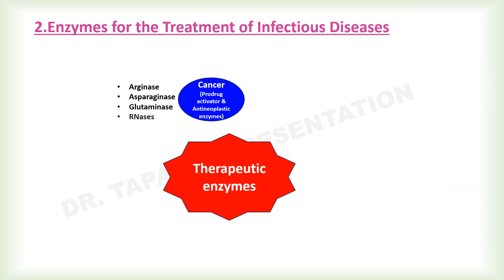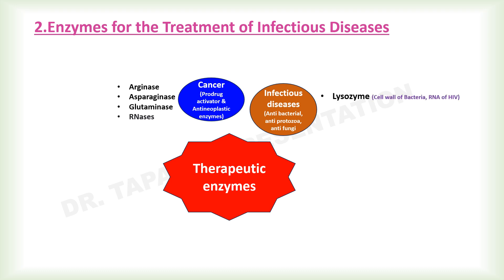Enzyme therapy is not only a safer alternative to antibiotics but will also automatically lower the number of bacterial or fungal resistant strains. Enzymes used for the treatment of infectious diseases act as antibacterial, anti-protozoa, or anti-fungi agents. Lysozyme is used as a naturally occurring antibacterial agent in many foods and consumer products because of its ability to break carbohydrate chains in the cell wall of bacteria. It has also been shown to possess activity against HIV because it has RNase A and urinary RNase U which selectively degrade viral RNA, opening exciting possibilities for the treatment of HIV infection.